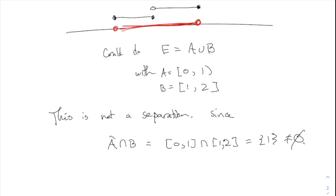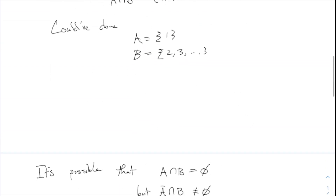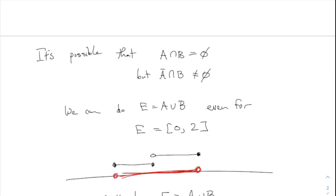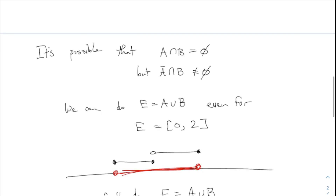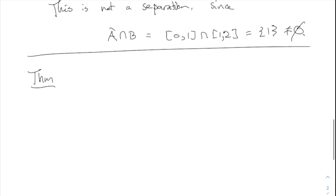The closure business is an important part of the definition — it's not just some extra technicality for fun. One last thing about connected sets: there's a relationship between this definition using separations with closures, and the idea of points being in-between other points. I want to state this as a theorem — this separation-and-closure definition is equivalent to this other notion of connectedness involving betweenness.